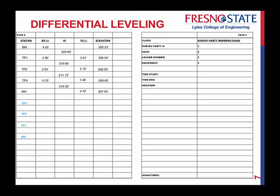To do that, we're going to go through the same process. We now go backwards, we use backsights and foresights, go all the way through. After doing all that, we end up at 205.15.